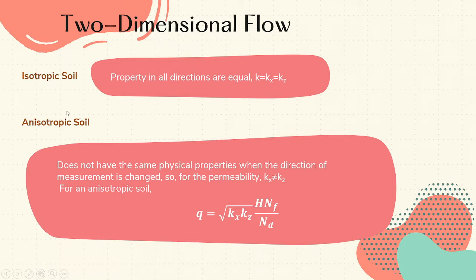When we say the soil is isotropic, the properties in all directions are equal. So for the case of soil, the hydraulic conductivity along the x or z direction is equal.